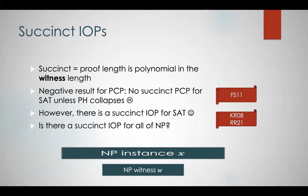Kali and Roz asked whether there exists a succinct PCP for all of NP. Fortna and Santanam gave a negative answer to that question, showing that under a standard complexity assumption, there is no succinct PCP for SAT. However, we know that there exists a succinct IOP for SAT — in fact, we know a couple of constructions. This creates a separation between IOPs and PCPs: an IOP can do something that we believe a PCP cannot.